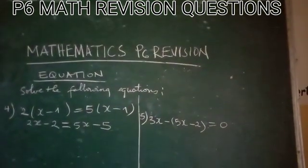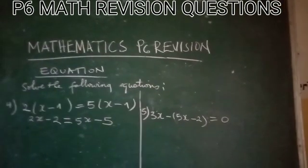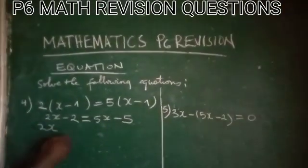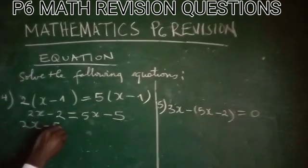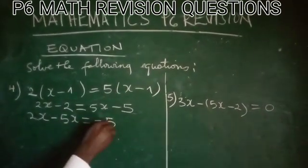And then, we are going to group together the numbers with a sign of x. 2x minus 5x will be equal to negative 5.